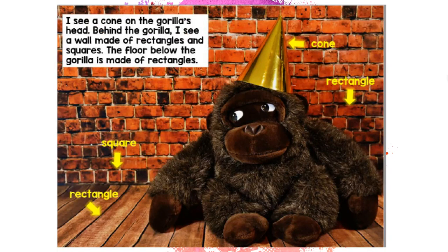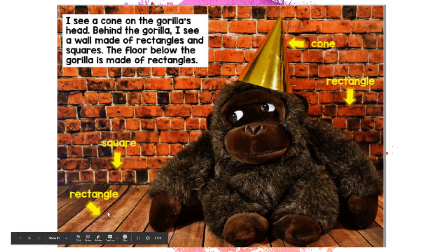Now let's look at this picture. I can see a cone on the gorilla's head. Behind the gorilla, I see a wall made of rectangles and squares. Those are flat. The cone is not flat. See how it stands up on his head? The floor under the gorilla is made of rectangles.